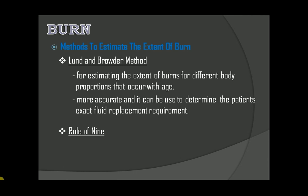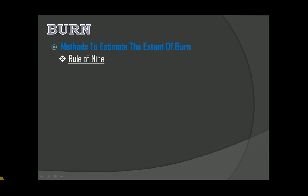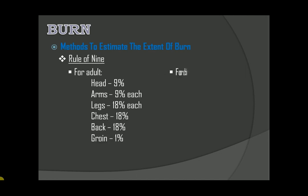The Lund and Browder method is more accurate and can be used to determine the patient's exact fluid replacement requirement. Next is the rule of nine. In this method, the patient's body is divided into different sections and each section represents 9% of the total body area. These are the percentages in each section, for adults and for children.